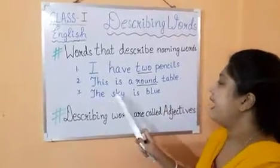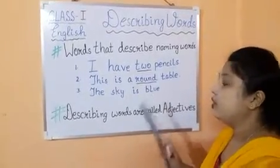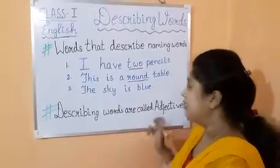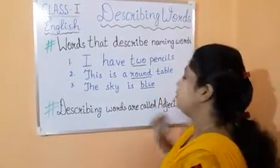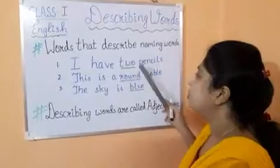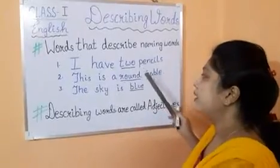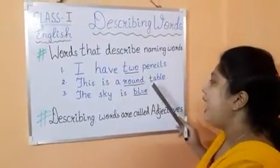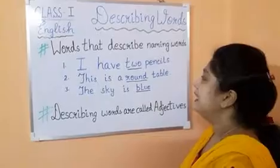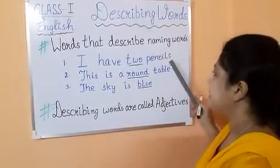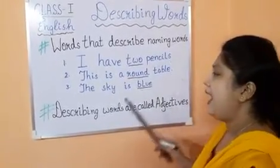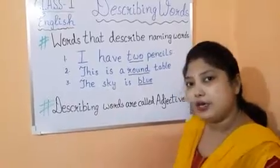The sky is blue. What is the color of the sky? Blue. So, the words 'two', 'round', and 'blue' are describing the naming words: pencils, table, and sky.